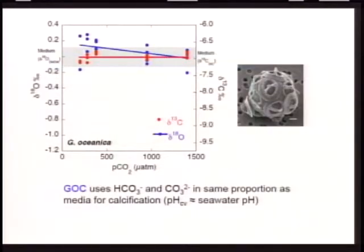Here are the results for Gephyrocapsa oceanica, the relatively small coccolithophore. Across all of the carbon experiments performed, it has very similar both carbon and oxygen isotopes in the calcium carbonate being produced, and those carbon and oxygen isotopes all reflect the bicarbonate ion in the medium. This really seems to show that under all these different conditions, Gephyrocapsa oceanica is using the bicarbonate ion as the sole source of carbon for its calcification.